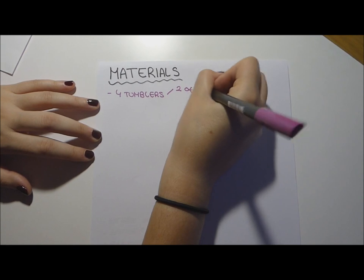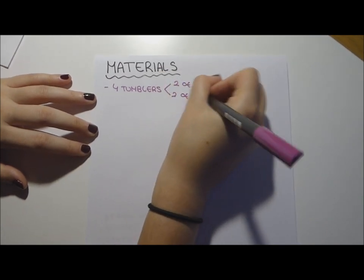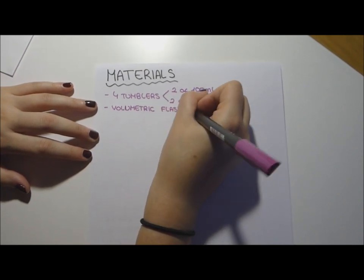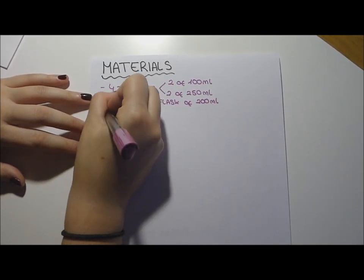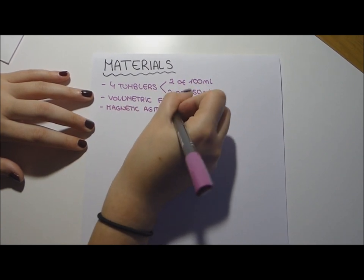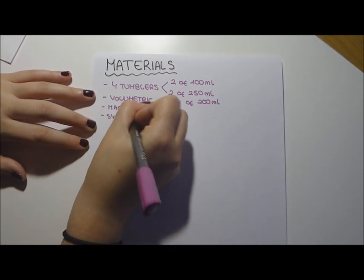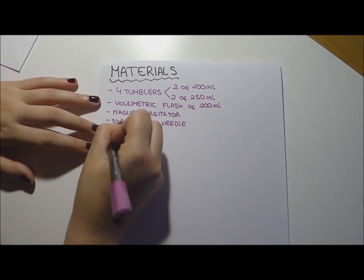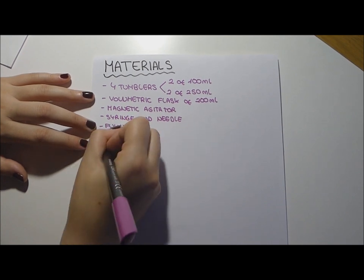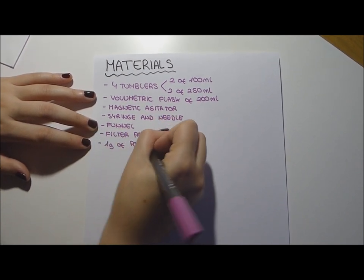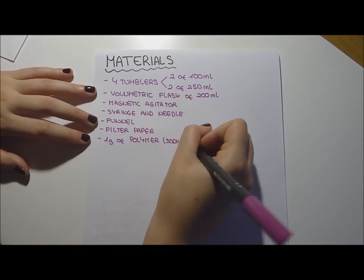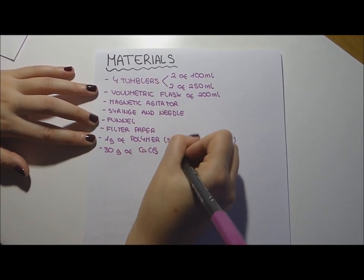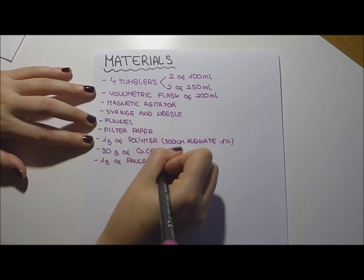Materials: Four tumblers, two of 100 milliliters, two of 250 milliliters, one volumetric flask of 200 milliliters, magnetic agitator, syringe, needle, one funnel, filter paper, one gram of polymer sodium alginate one percent, 30 grams of calcium chloride 50%, one gram of pancreatine, and water.